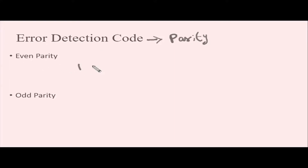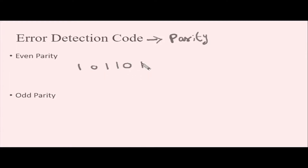Suppose I have information like this: 10110. Initially, I will simply count the number of ones present in this bitstream. In this bitstream I have 3 ones, so that means this is an odd number. To make this information even, I will simply add 1 bit. Now there are 4 ones in this bitstream. So by adding this 1 to this particular message, it is converted to even parity.